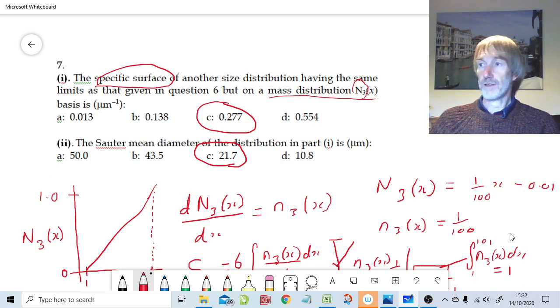So question seven is fairly straightforward and the takeaway message is it's much easier to work with mass or volume data rather than number data.